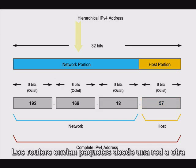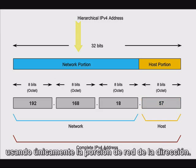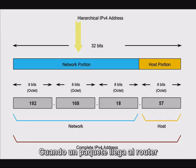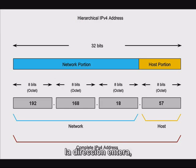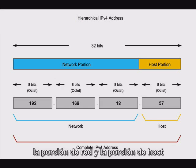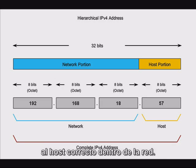Routers forward packets from one network to another by only using the network portion of the address. When the packet arrives at the router where the destination host resides, the whole address — both the network portion and the host portion — will be used to deliver the packet to the right host within the network.